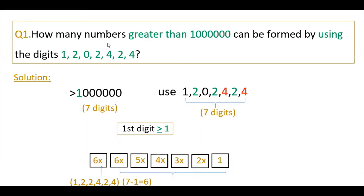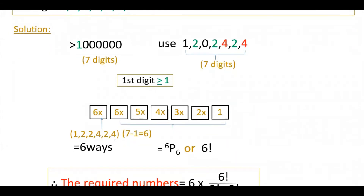Now moving to the first question: how many numbers greater than one million can be formed by using the digits 1, 2, 0, 2, 4, 2, 4? We have to find numbers greater than one million. This number is seven digits and we have seven digits to use. The first digit should be greater than or equal to 1, so except zero, we can use any of the remaining six digits — that gives 6 ways for the first box.